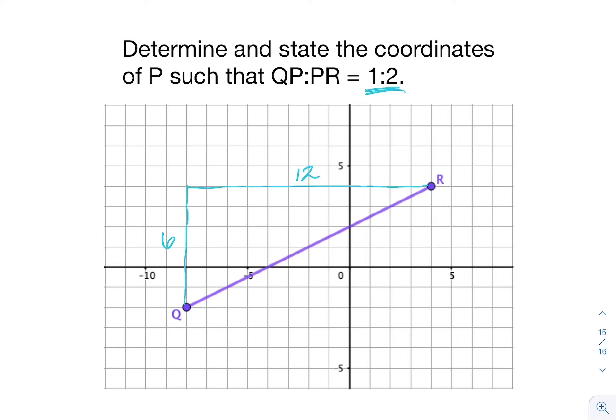I have my rise and my run, which I'm going to think of as my distance from one endpoint to the other. To create a 1 to 2 ratio, that means I need to split it into three equal pieces.